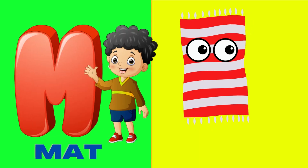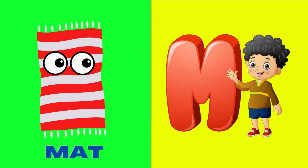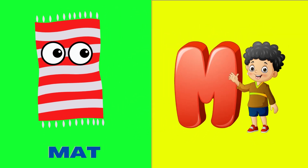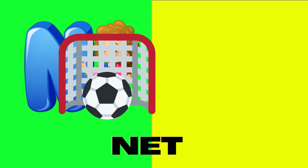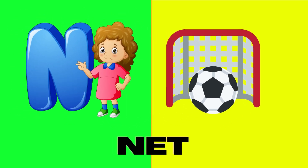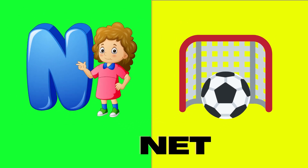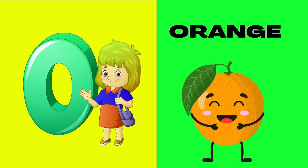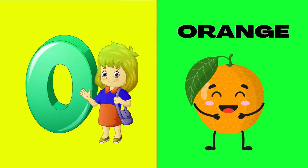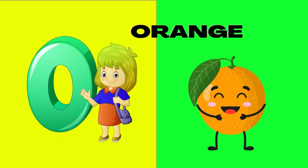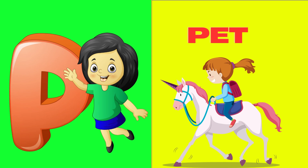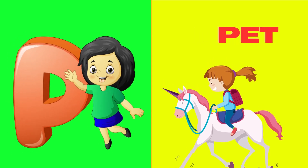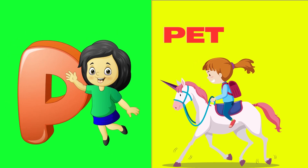M is for mat, m-m-mat. N is for net, n-n-net. O is for orange, o-o-orange. P is for pet, p-p-pet.